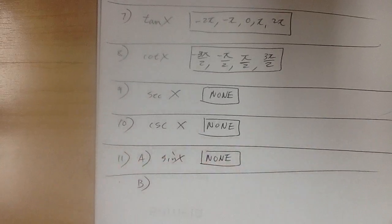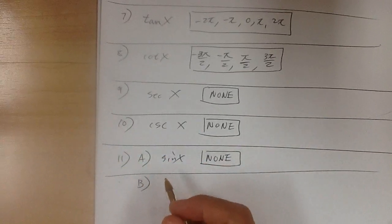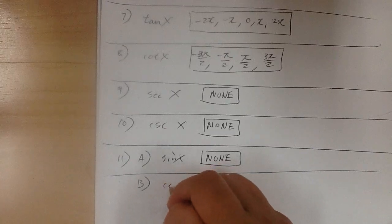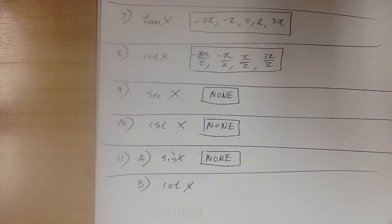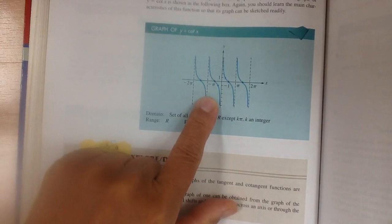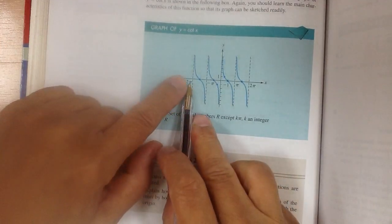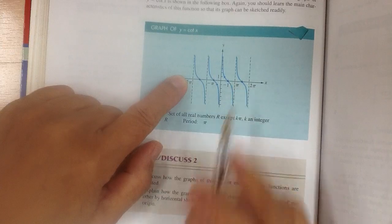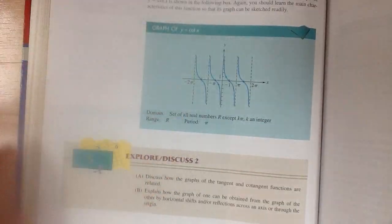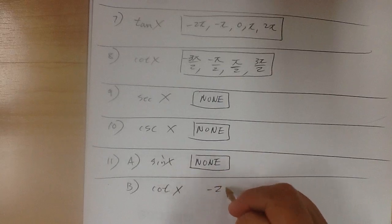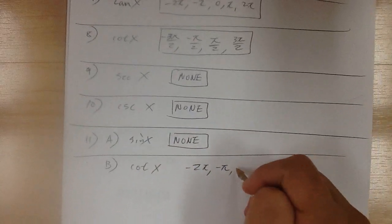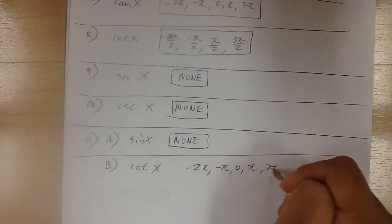For 11b, cotangent of x — you're looking for asymptotes, which are the restricted values. The asymptotes for cotangent are at negative 2pi, negative pi, 0, and 2pi. So those are the undefined values.